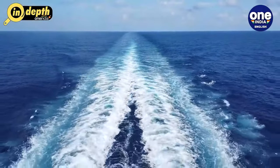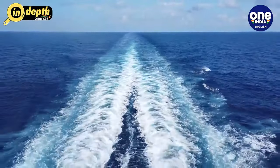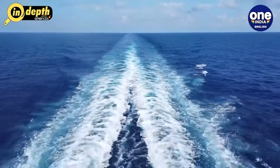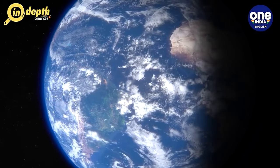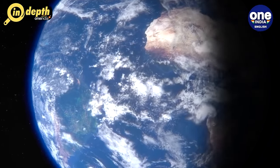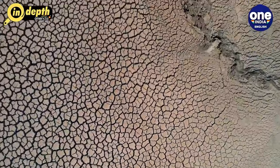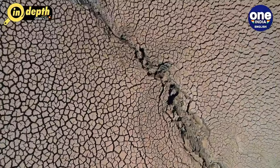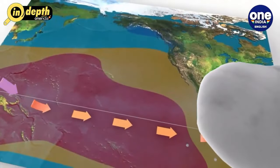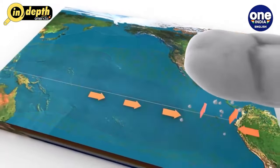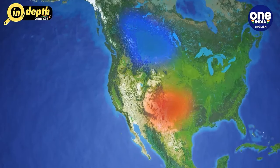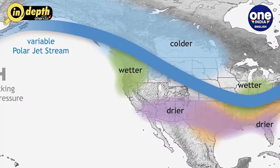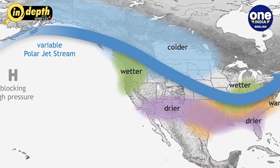On the other hand, La Niña occurs when ocean water in the central and eastern Pacific is colder than average. This leads to changes in atmospheric circulation that can cause opposite effects to El Niño. During a La Niña event, parts of South America may experience drought conditions, while India, other parts of Asia, and Australia may experience very heavy rainfall. In North America, La Niña can cause colder and drier conditions in the southern part of the continent, while the northern part may experience warmer and wetter conditions.